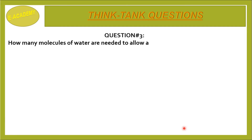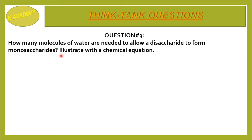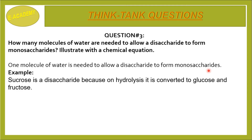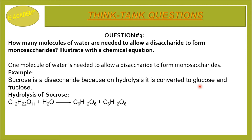Question No. 3: How many molecules of water are needed to allow a disaccharide to form monosaccharides? Illustrate with a chemical equation. One molecule of water is needed. For example, sucrose is a disaccharide because on hydrolysis it is converted to glucose and fructose. When we react sucrose with water, glucose and fructose are formed. So the total number of water molecules needed is one.